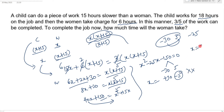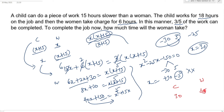Ignore the negative value x equals minus 5. So x equals 30. The woman's time is 30 hours and the child's time is 30 plus 15 equals 45 hours. Total unit work is 30 into 45.